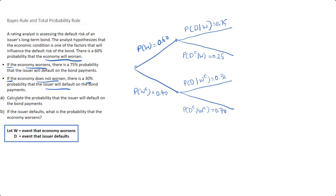Now for Question A, we calculate the probability that the issuer will default on the bond payments, regardless of whether the economy worsens or not. We take the weighted average of these events. There are four paths on this tree — paths 1, 2, 3, and 4. Out of these, paths 1 and 3 indicate that the issuer defaults, while paths 2 and 4 indicate no default.